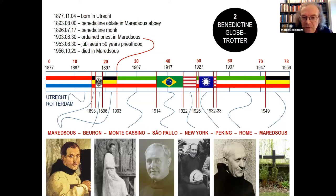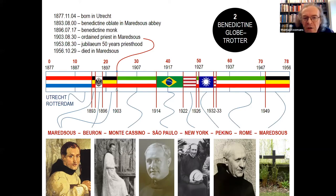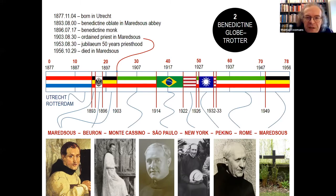Secondly, he was a Benedictine — a monastic order that usually requires stability in one abbey — but in his case he was a Benedictine globetrotter. On this timeline, he lived 78 years: born in Holland as a Dutchman in 1877, he passed away in 1957 in Belgium. But in the meantime he spent time in Belgium, Germany, Italy, Brazil, the United States, China, and Italy again. The main reason he moved and traveled and stayed long periods in other countries was related to his work as an artist. He was commissioned to decorate abbey churches of the Benedictine order.